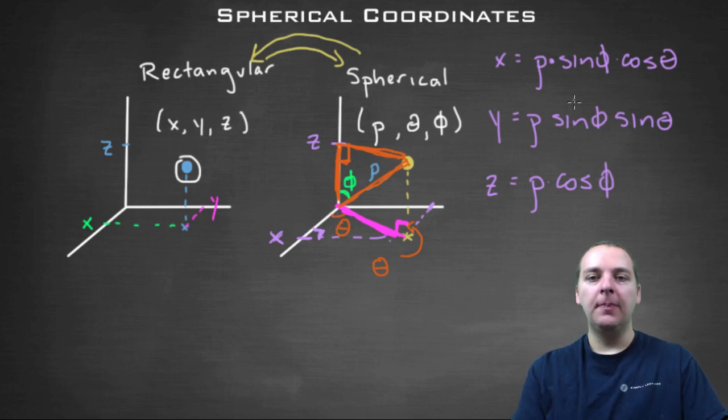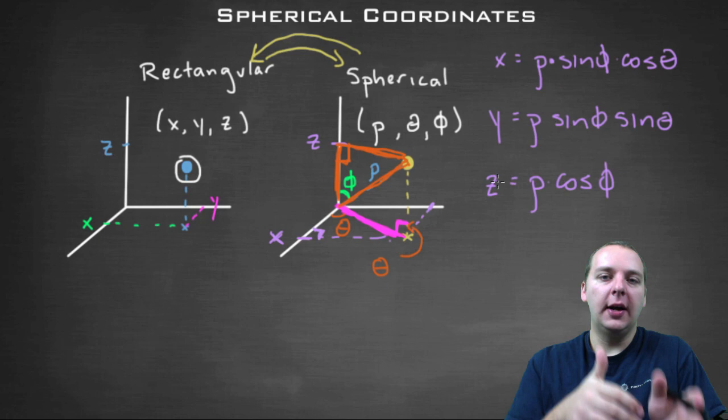Alright, so that's what you do if you're given rho, theta, and phi, and you want x, y, and z. So you can call that spherical to rectangular. But how do you go the other way?